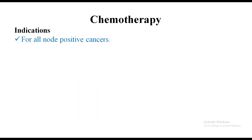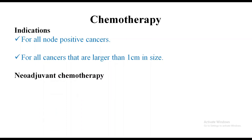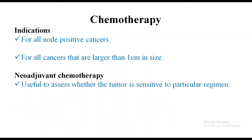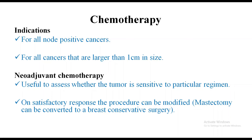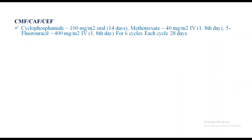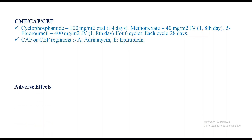Chemotherapy indications: all node-positive cancers and all cancers larger than one centimeter in size. Neoadjuvant chemotherapy is useful to assess whether the tumor is sensitive to a particular regimen. An unsatisfactory response can lead to modified procedures; mastectomy can be converted to breast conservation therapy when there is good response and tumor size has decreased. Examples of regimens: CMF (Cyclophosphamide, Methotrexate, Fluorouracil) given for six cycles each lasting 28 days. CEF or CAF regimens — A is Adriamycin, E is Epirubicin.